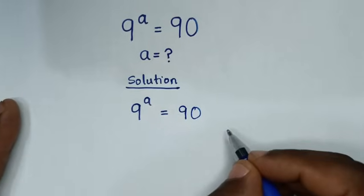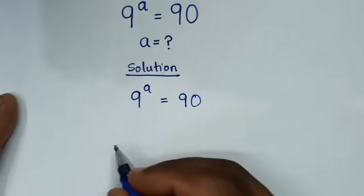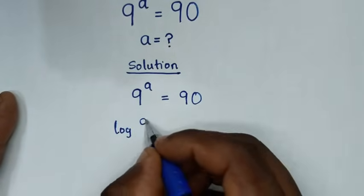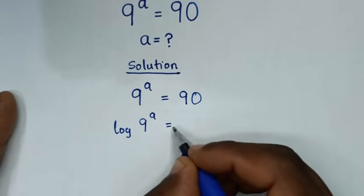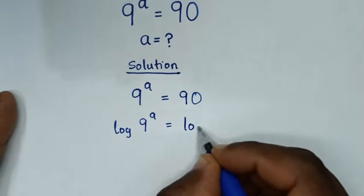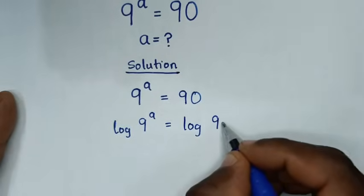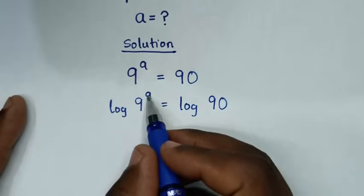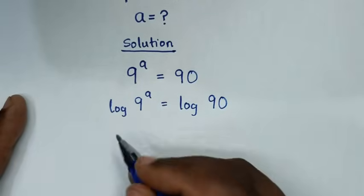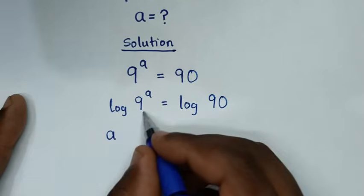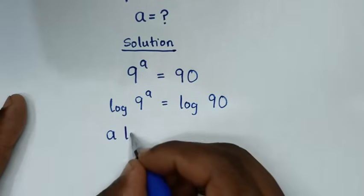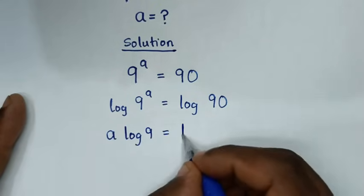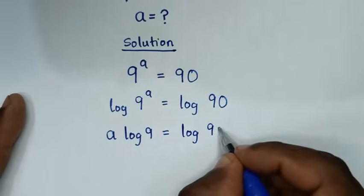In the first step, we'll apply log to both sides. So it will be log of 9 power a is equal to log of 90. Then in the next step, this power of a will move to the front, so it will be a times log of 9 is equal to log of 90.